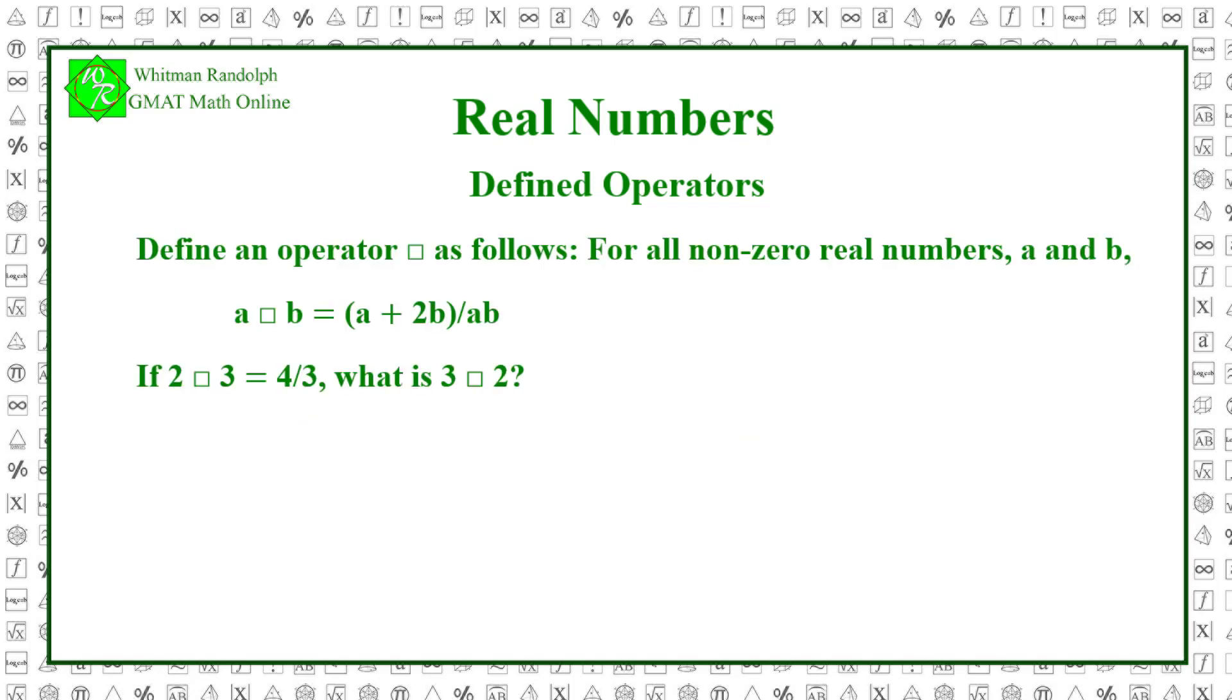Problem: Define an operator box as follows. For all non-zero real numbers a and b, a box b equals (a + 2b) / ab. If 2 box 3 equals 4/3, what is 3 box 2? And here are some possible answers. Let's find a solution.